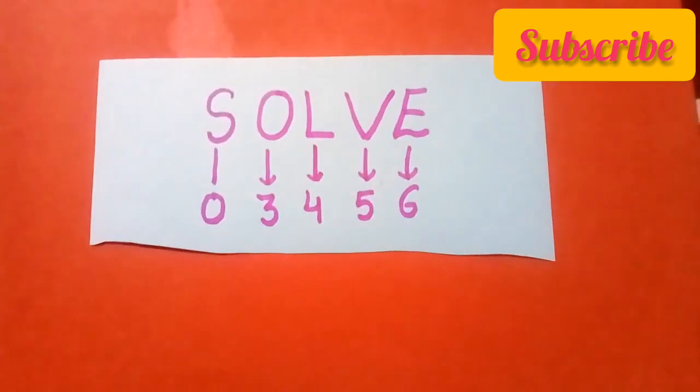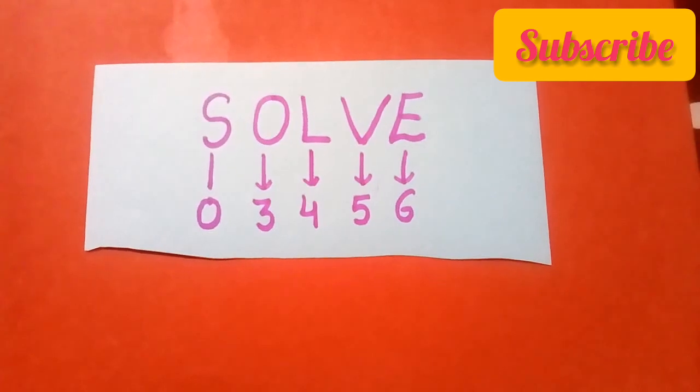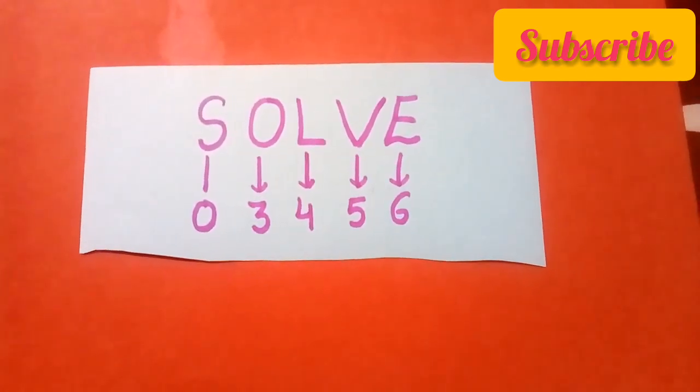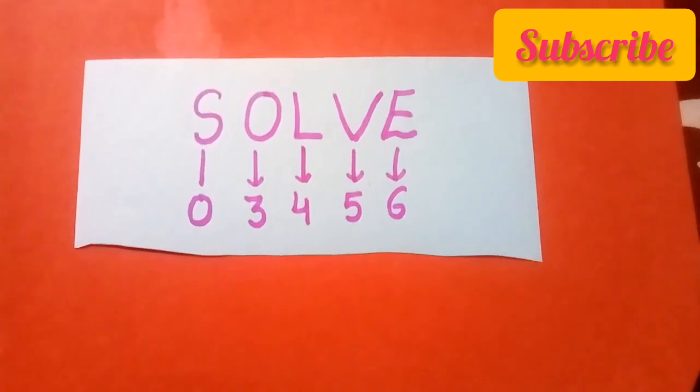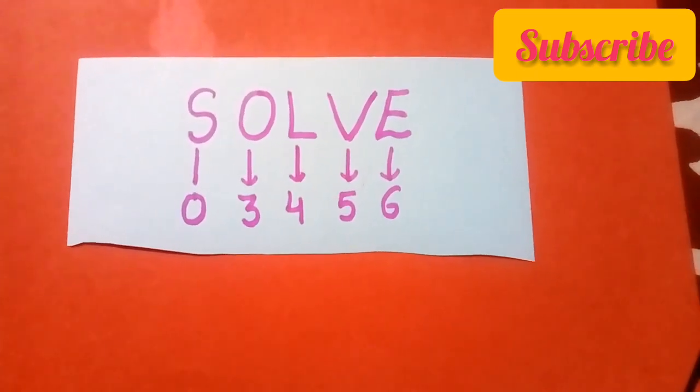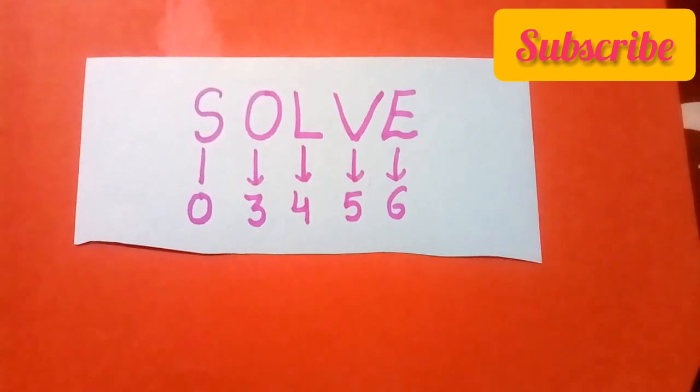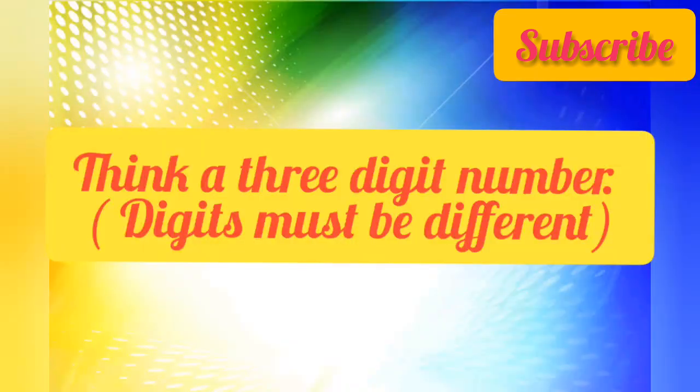Now let us give it a code: S 0, O 3, L 4, V 5, and E 6, means the code will be 0 3 4 5 6. To understand the magic, follow the steps.